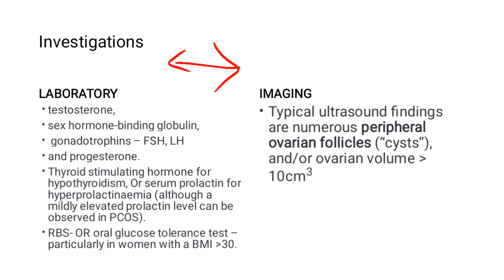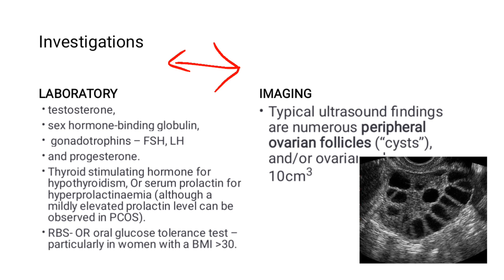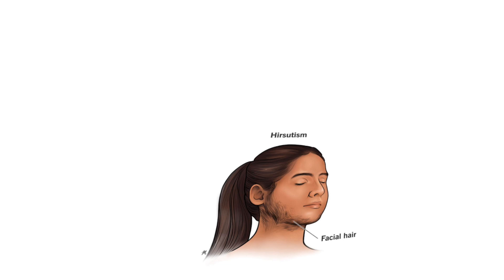For imaging, a pelvic ultrasound is performed. Typical ultrasound findings include numerous peripheral ovarian follicles or cysts and an ovarian volume of more than 10 ml. This is how it looks on ultrasound — multiple cysts can be seen. Depending on the literature, a specific number of follicles may be required to make the diagnosis of polycystic ovarian syndrome.